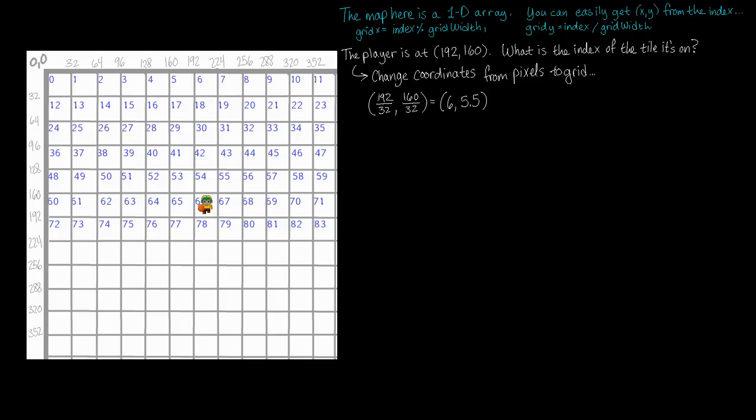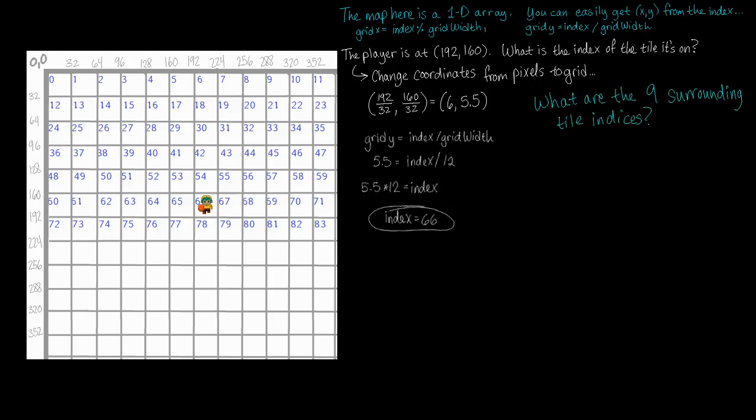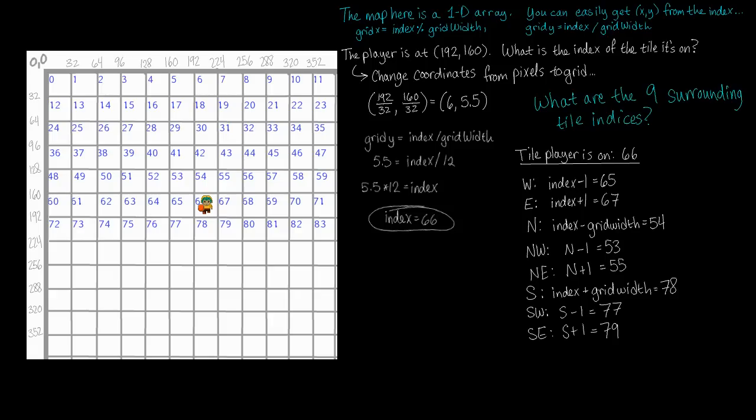The result is 6 and 5.5. From the Y coordinate we got, we can solve for the index by using the equation I wrote in cyan on the top. We have the Y coordinate and the width of the map, so getting the index is easy. From that, we can find the indices of all 9 tiles immediately around the player. With that method, you only need to do some simple math and you can get directly to the tile that you're looking for.